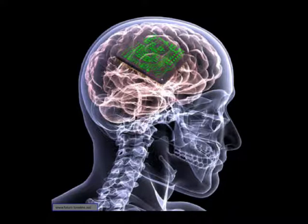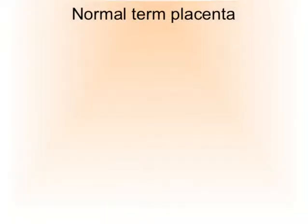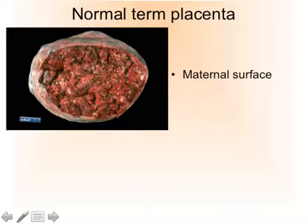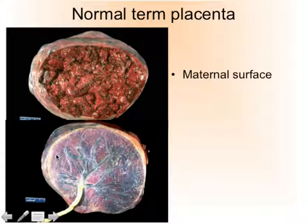Let's refresh your memory a little bit. This is how the maternal surface of the term placenta looks like. In the periphery here, we see the membranes. This is the area which has been attached to the uterus, to the so-called decidua — endometrium changed by pregnancy hormones. When we turn the placenta around, this is the fetal surface.